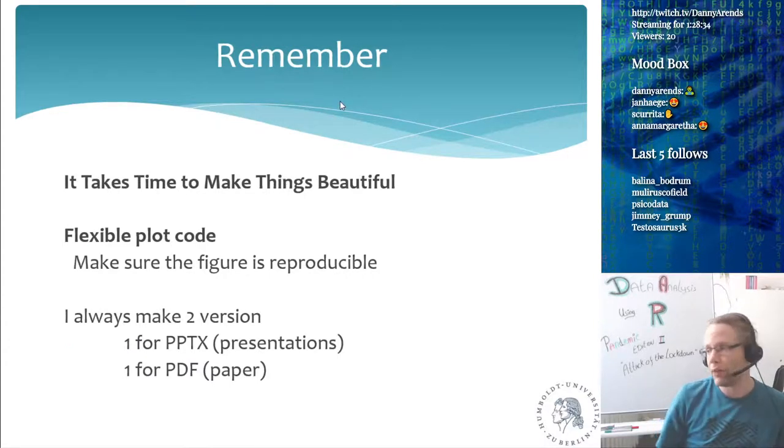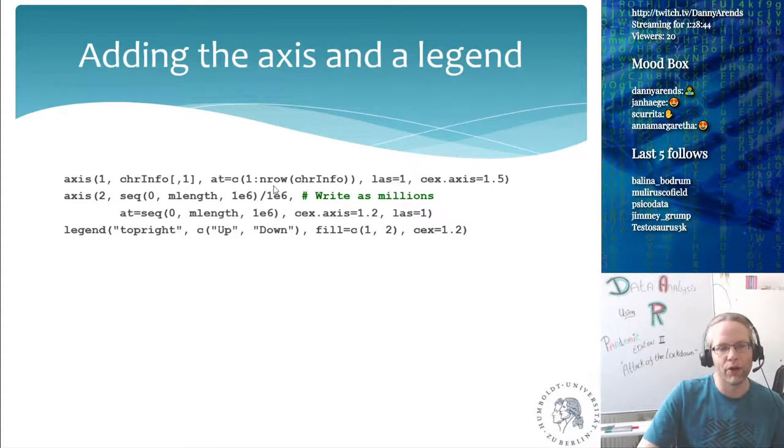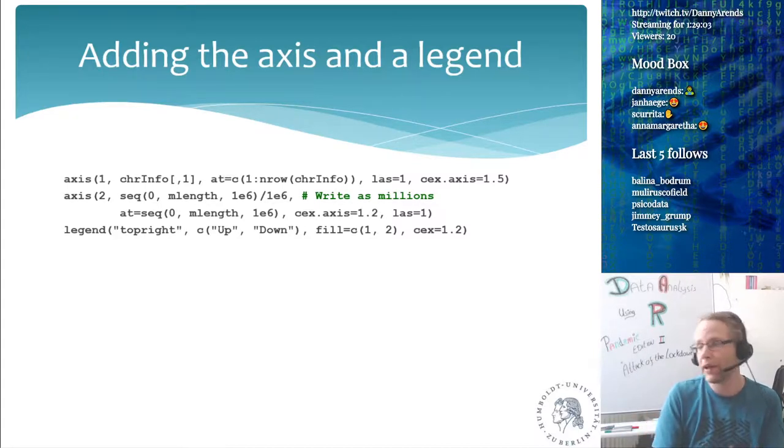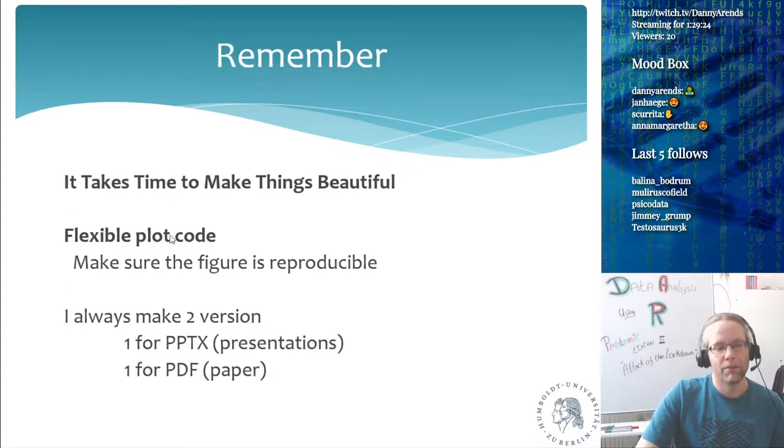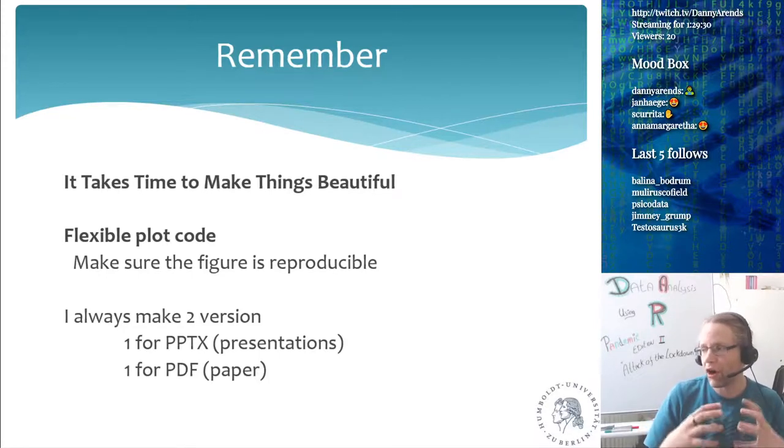So remember, it takes time to make things beautiful. Also make sure that your plotting code that you are writing is flexible. So you can see that in the chromosome plot, I take a lot of effort to not specify 23 or 22 or 21. I never write down the number of chromosomes that I have explicitly, I always use the input file. So that in case I want to now not plot for mice, but want to plot for cows, cows have a completely different number of chromosomes. But the plot function will still work, because I can add more chromosomes to the chromosome info thing, and then that will automatically get picked up by my script, and it will automatically draw 31 chromosomes instead of 19 or 20. So that is what I mean by use flexible plotting code.